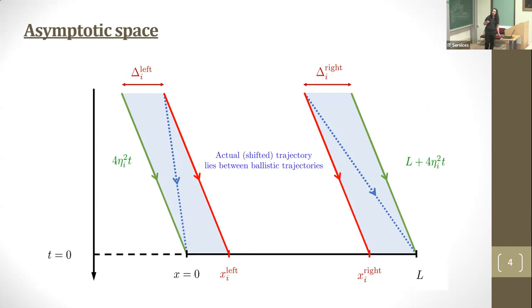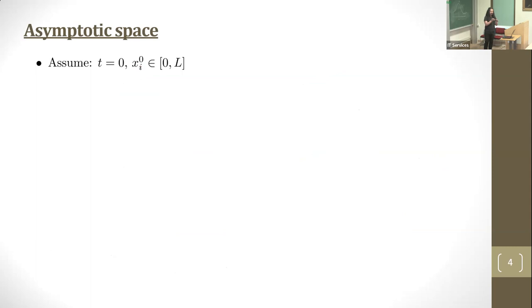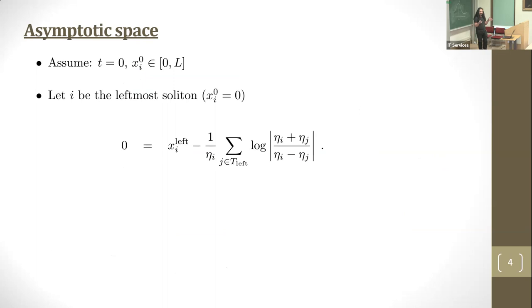Here's a sketch of the argument. I've drawn the ballistic trajectories. If solitons were free, they'd follow those trajectories, but they can be shifted forward or backward. A free soliton arriving at x left is shifted, and its actual trajectory lies between those two. If I assume all solitons at t equals zero are between zero and L, and soliton i is the leftmost, then at minus infinity it's ordered fastest to slowest.